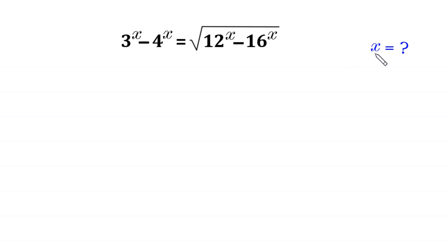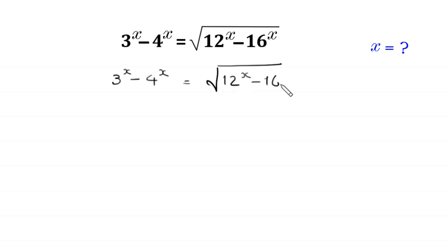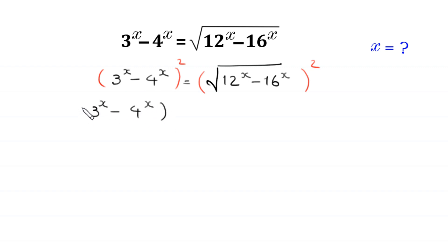Let us start by taking the square of both sides. So 3 to the power x minus 4 to the power x, whole squared, is equal to 12 to the power x minus 16 to the power x, since the square cancels out the square root on the right side.